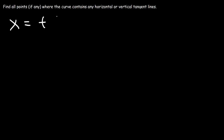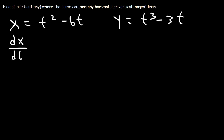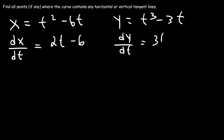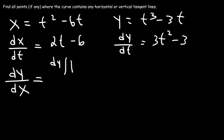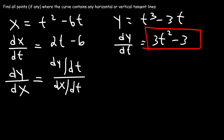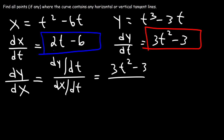Let's try another problem. This time x is t squared minus 6t, and y is t to the third minus 3t. Just like before, let's find dx/dt, which is 2t minus 6, and dy/dt, which is 3t squared minus 3. So dy/dx is dy/dt divided by dx/dt — that's 3t squared minus 3 over 2t minus 6.